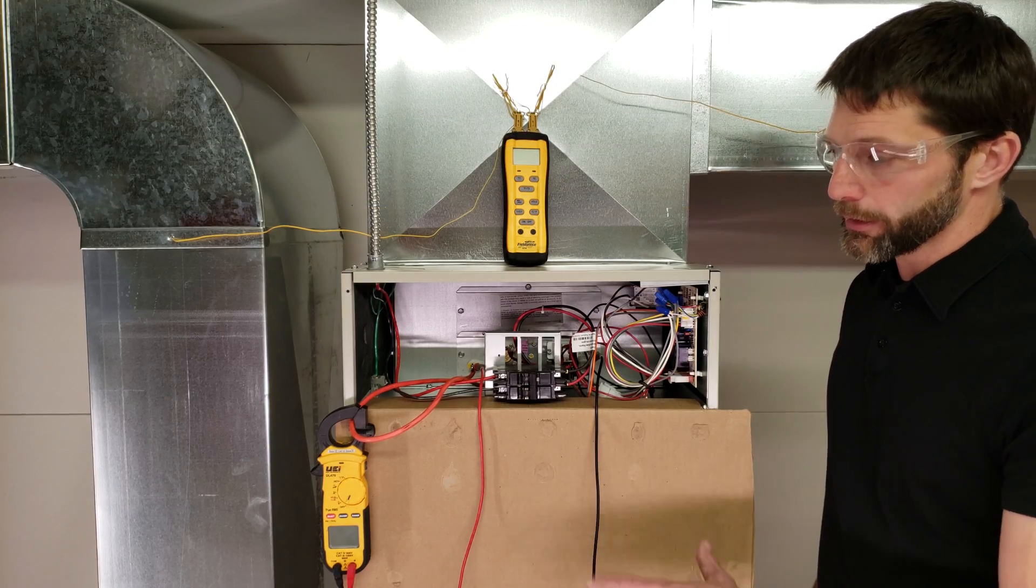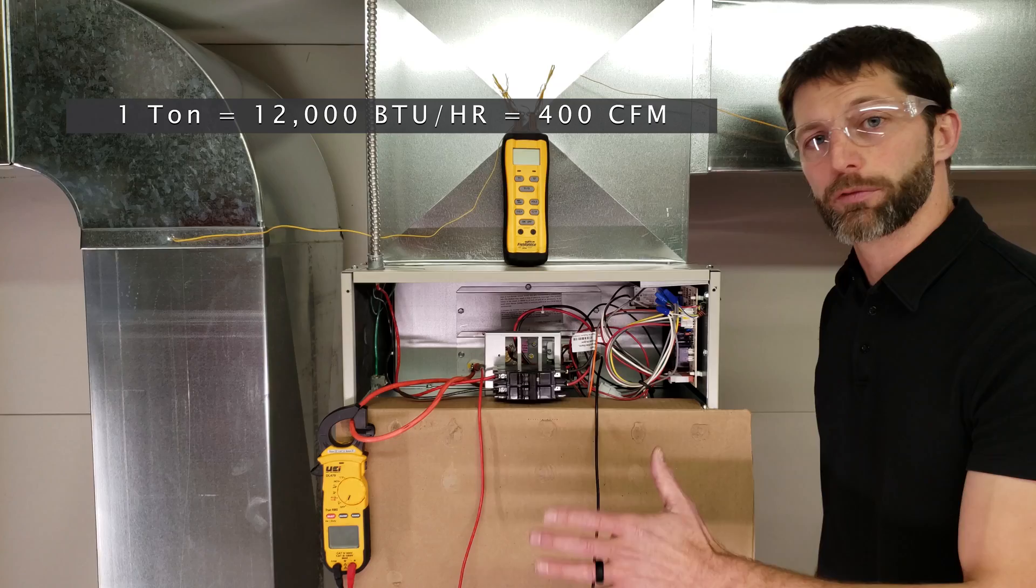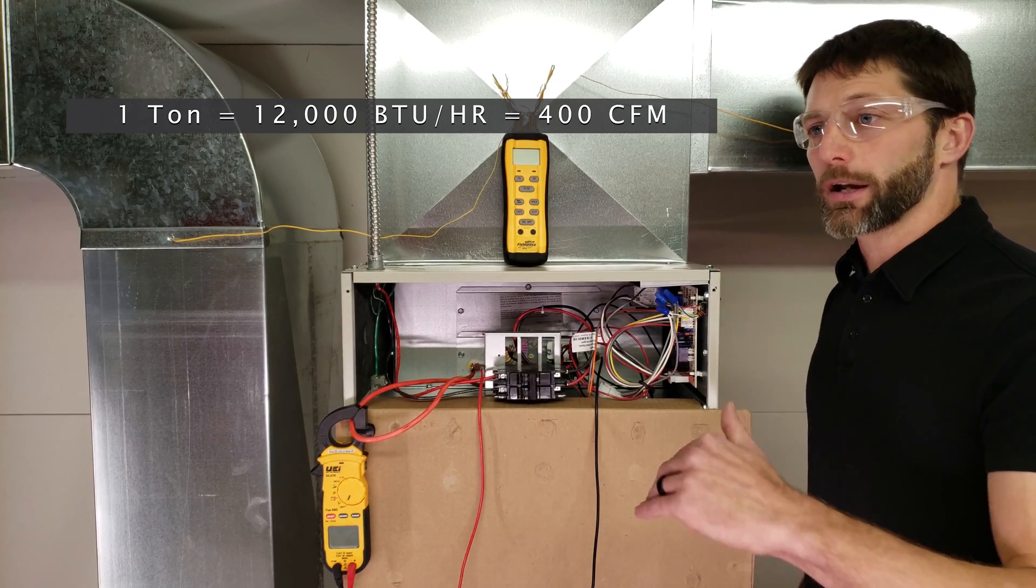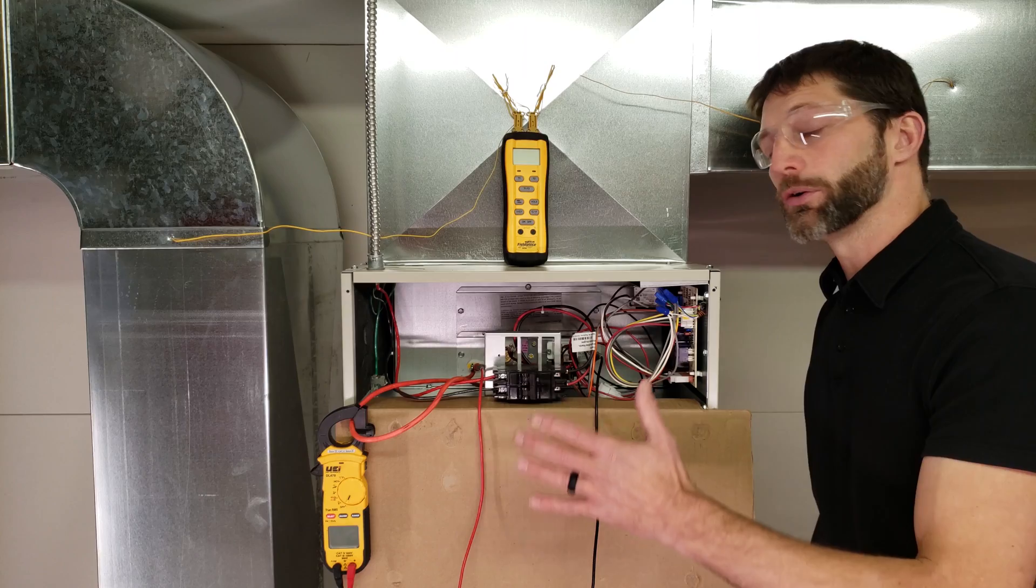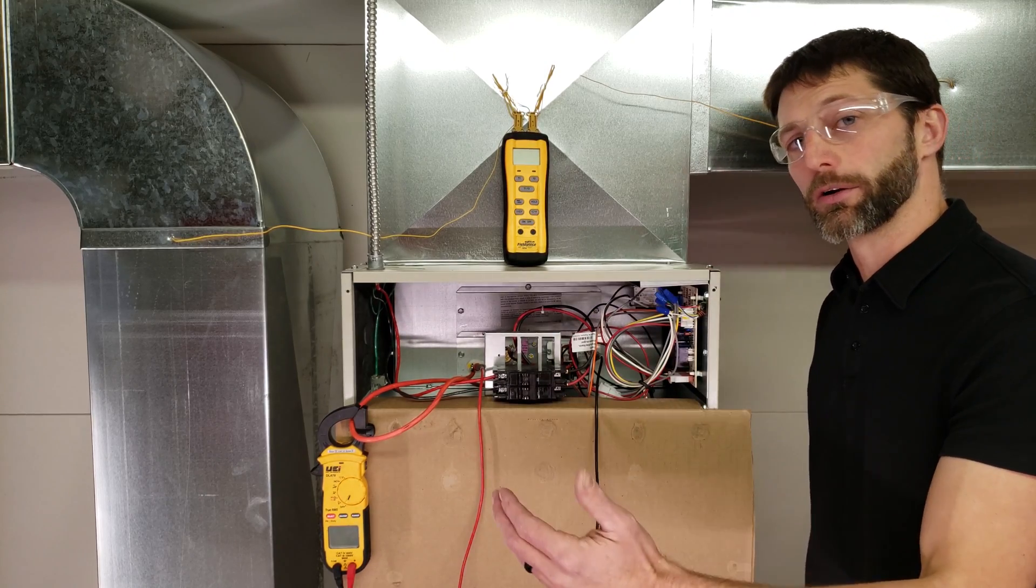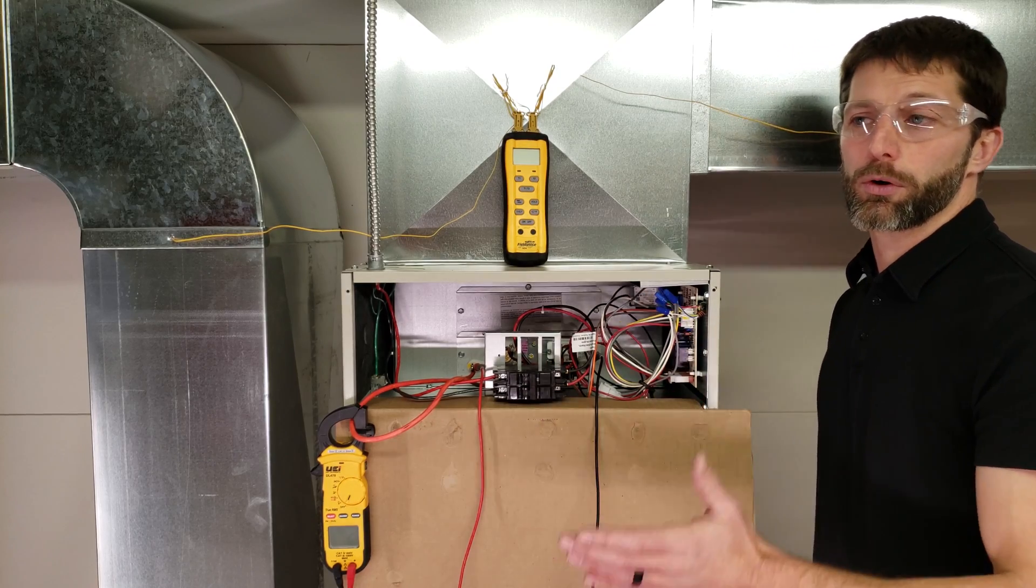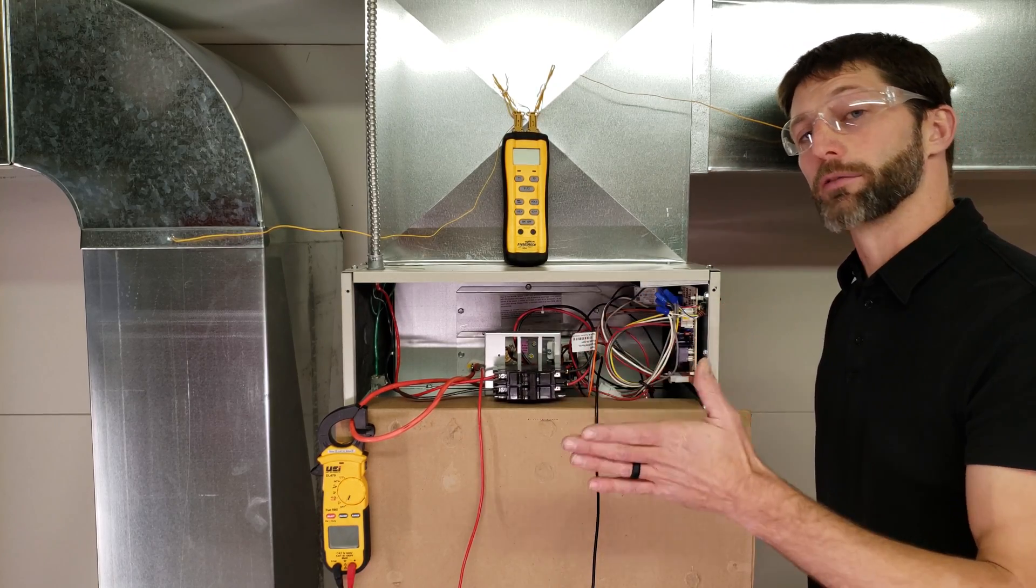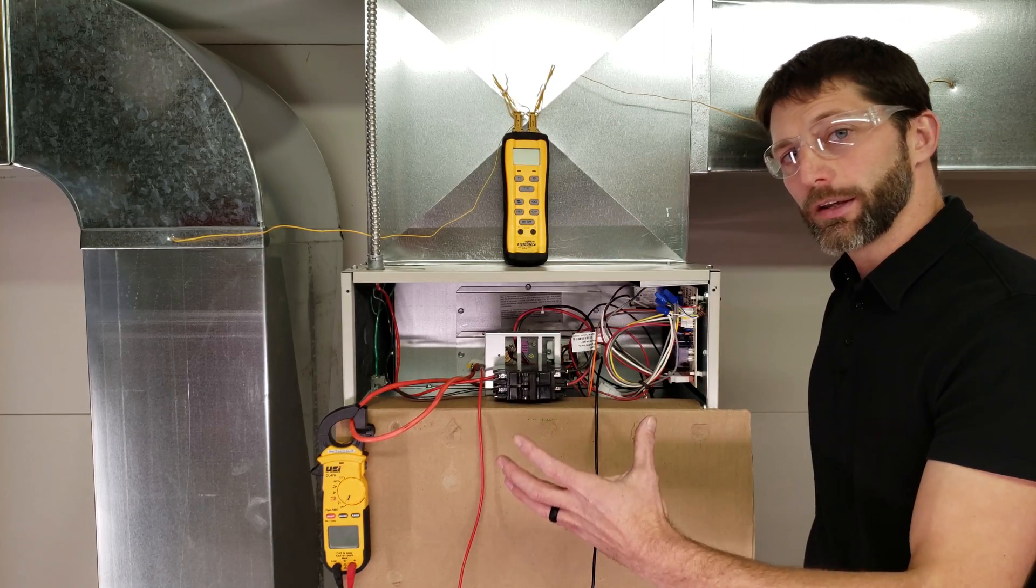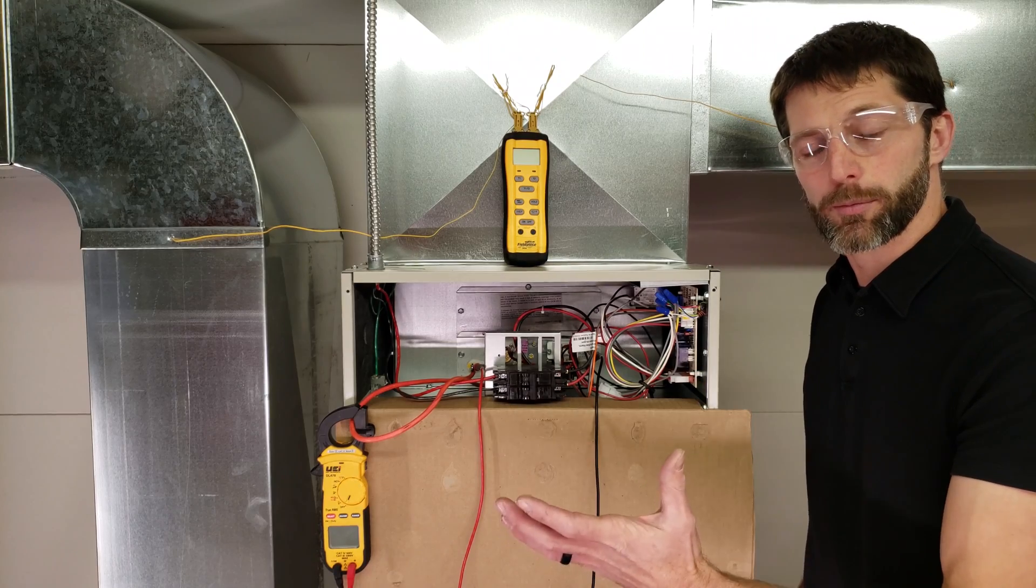So what you want to remember is that for every ton of capacity, you want about 400 CFMs of airflow for a cooling system, for an air conditioning system. So that could be, say, 350 to 425 CFMs. And you could have on the lower side that 350 if you're trying to remove a lot of humidity out of the building. But we're right about on the higher side right there. We're at 430 CFMs per ton. So 860 CFMs divided by two for a two-ton capacity equals 430 CFMs.